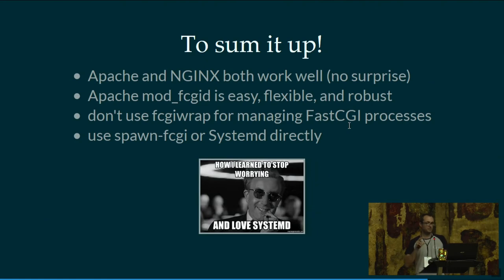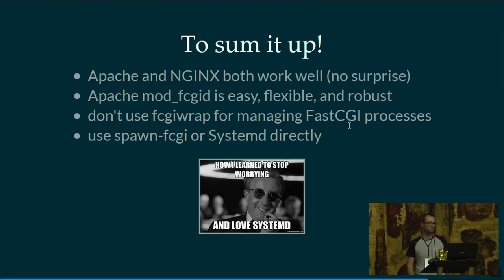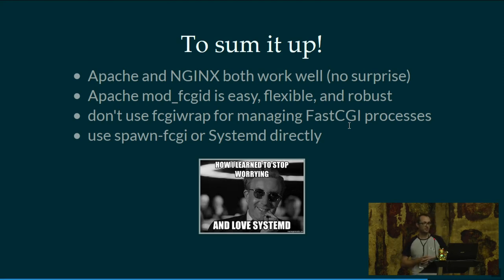To sum up the options: Apache and Nginx are both very good solutions that work very well. Apache FCGID is a very easy, flexible, and robust solution — if you're already an Apache user, this is definitely a good option. If you use Nginx, don't use fcgiwrap for managing your processes. Use spawn-fcgi or systemd directly.